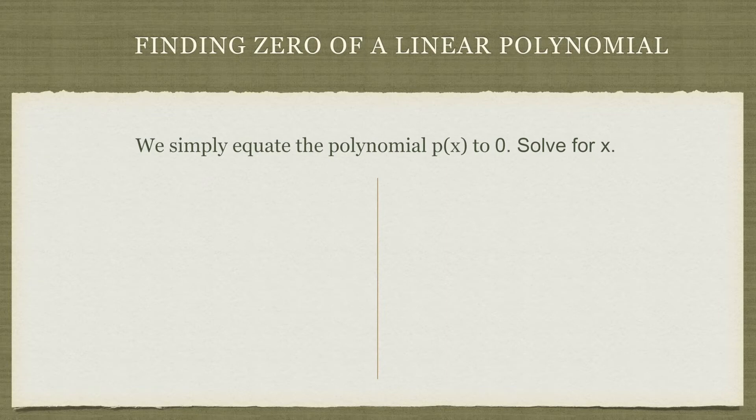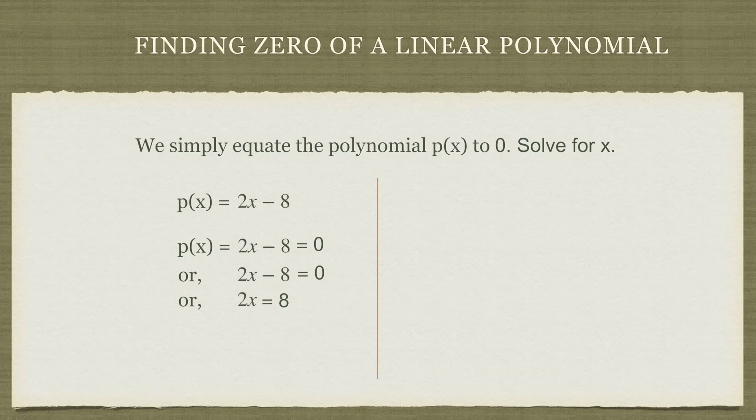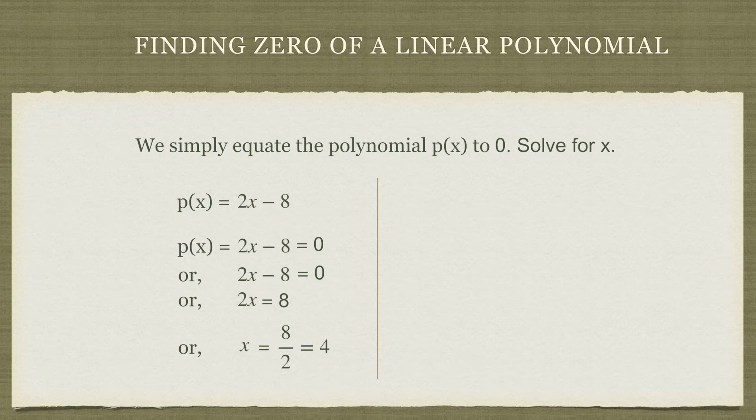Let's take a look at some examples, especially finding zeros of linear polynomials. Say our polynomial is 2x minus 8. We equate 2x minus 8 to zero and then solve. We get 2x minus 8 equals zero, or 2x equals 8, or x equals 8 by 2, or simply 4. So 4 is the zero of the polynomial 2x minus 8.